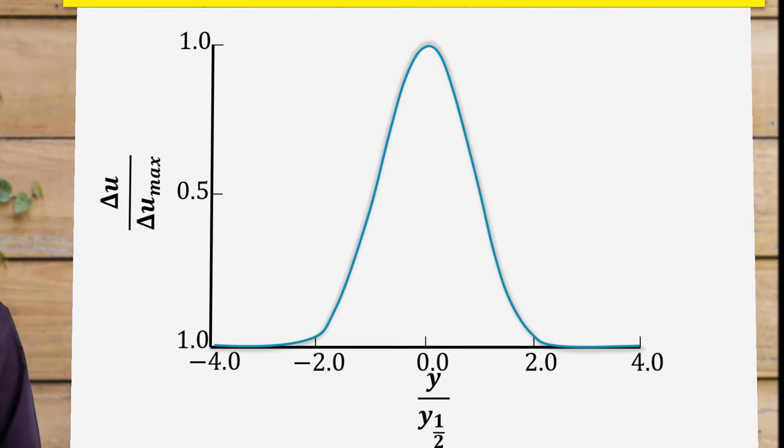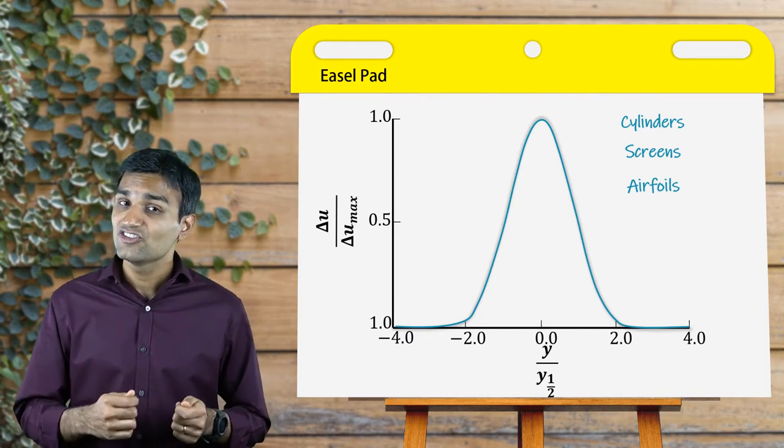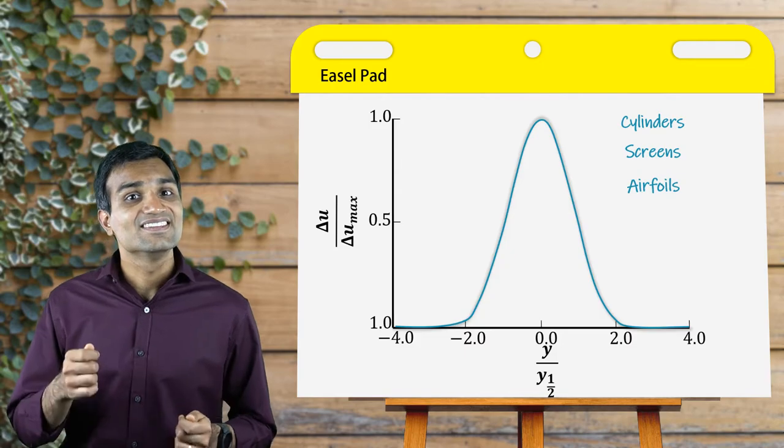This data was obtained from different types of bodies such as cylinders, screens, and airfoils. These wakes achieve self-similar solutions after several hundreds of momentum thicknesses downstream of the bodies. For most turbulent solutions, we need to depend on experiments to obtain some solution. To obtain more accurate results, we turn our attention to high-fidelity CFD simulations to analyze these free shear flows.